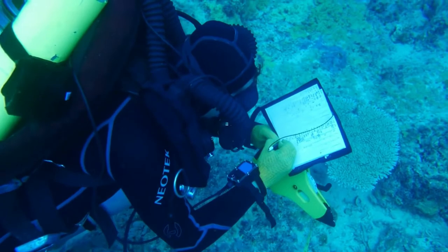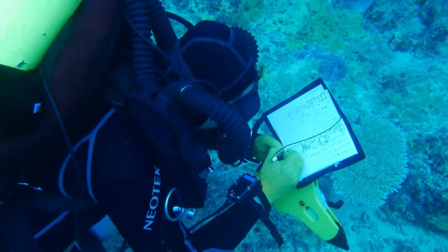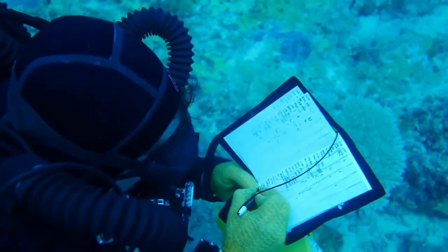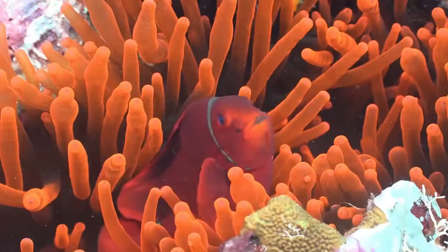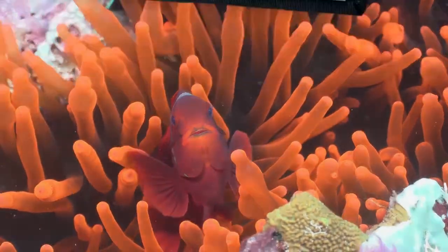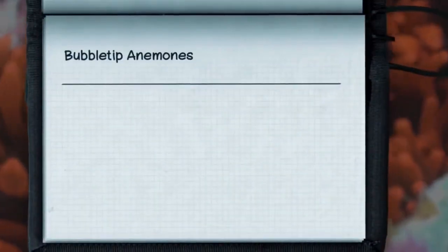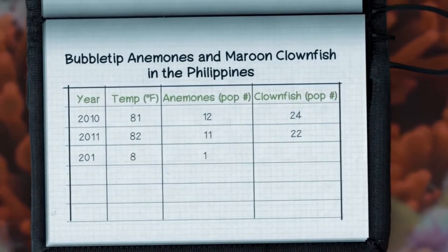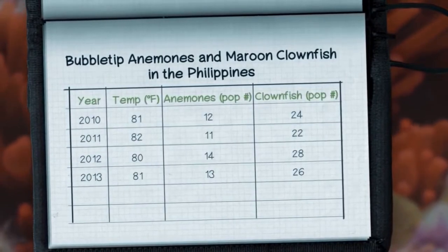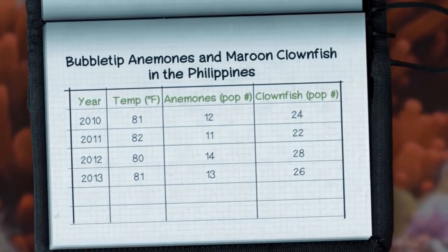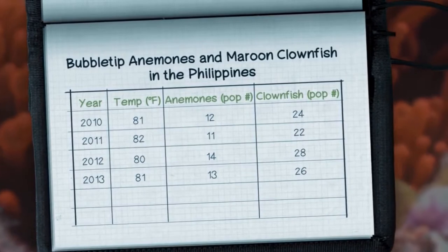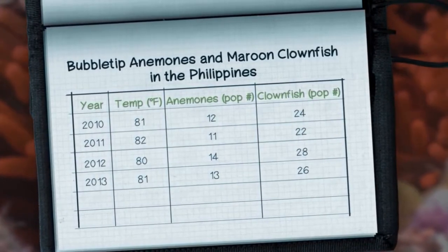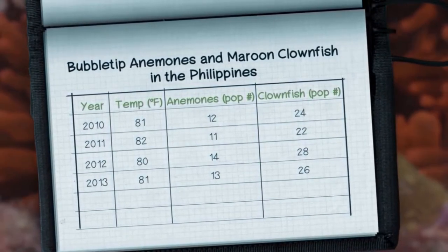Imagine you're a biologist exploring the relationship between bubble-tip anemones and maroon clownfish in the Philippines. You visit the same coral reef every year and sample only bubble-tips that host maroon clownfish. Look over your field notes now. What trends do you see?